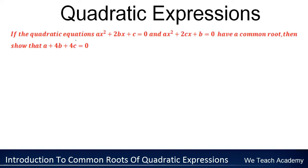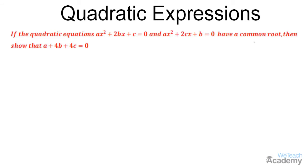Here given that if the quadratic equations ax² + 2bx + c = 0 and ax² + 2cx + b = 0 have common roots, then we have to show that a + 4b + 4c = 0.